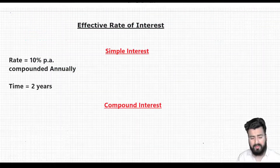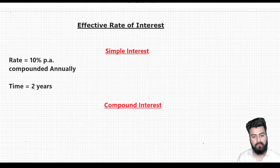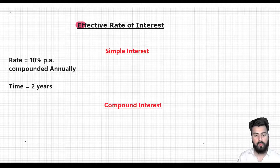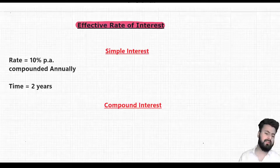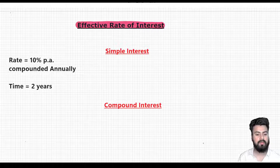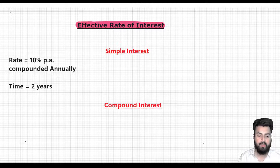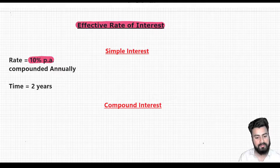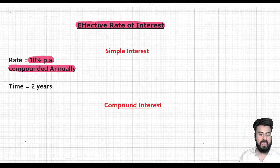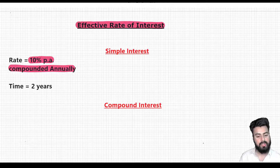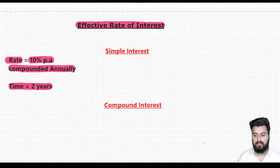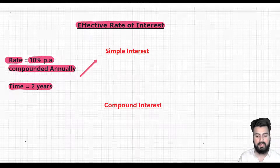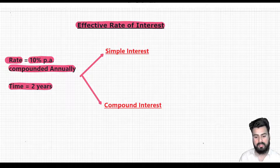The first thing I want to talk about is the concept of effective rate of interest. We'll understand what it is in a while, but before that let me show you the data we are going to use. I have kept the rate as 10% per annum compounded annually and the time duration is 2 years. For this data we are going to do the calculation of simple and compound interest.